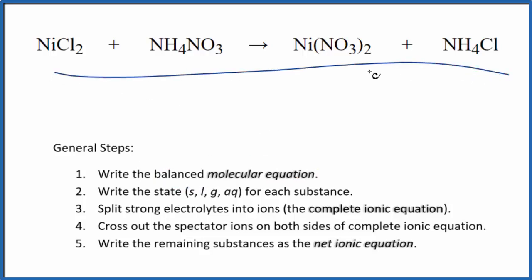This is the molecular equation. So I can see I have two chlorine atoms here, just one here. I'm going to put a 2 in front of the ammonium chloride. But now I have two ammonium ions. So I want to put a 2 in front of the ammonium nitrate.